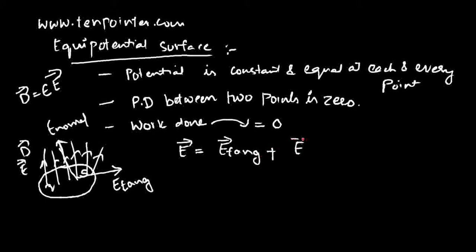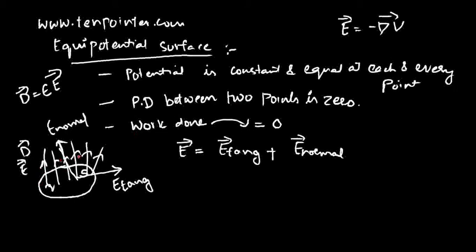The electric field vector E-bar is equal to E-tangential plus E-normal — these are vectors. The resultant of the tangential component and the normal component gives you the actual electric field vector. We also know the relation between E-bar and scalar potential V as E equals minus del V, so if you know the potential V, you can find out the electric field.